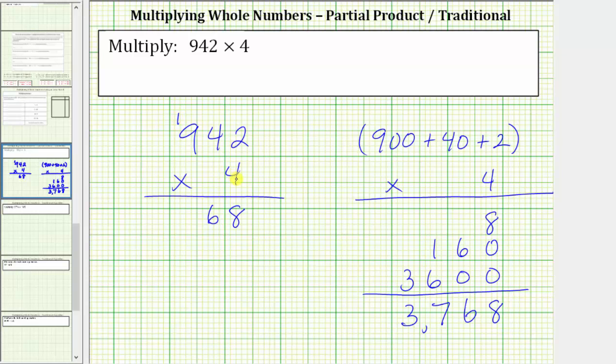And then we multiply four and nine. Four times nine is 36. Then we add the one, which gives us 37. We record the 37 by placing a seven in the hundreds and a three in the thousands.